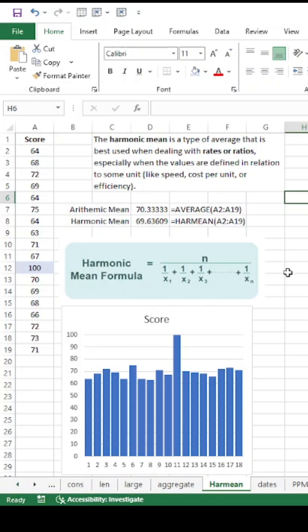Harmonic mean is a formula that allows you to take what is similar to arithmetic mean, but be able to discount a large outlier of a number.